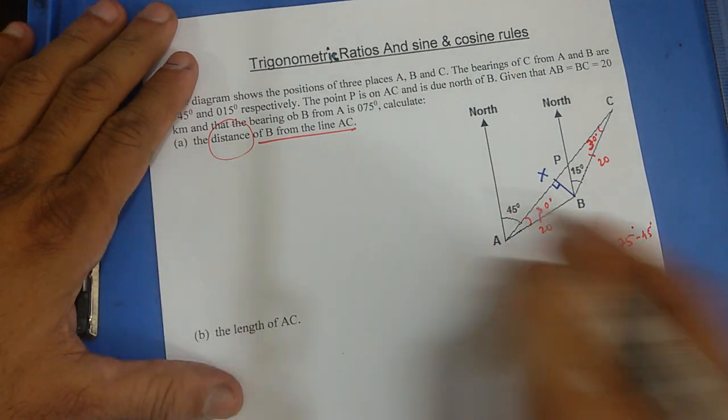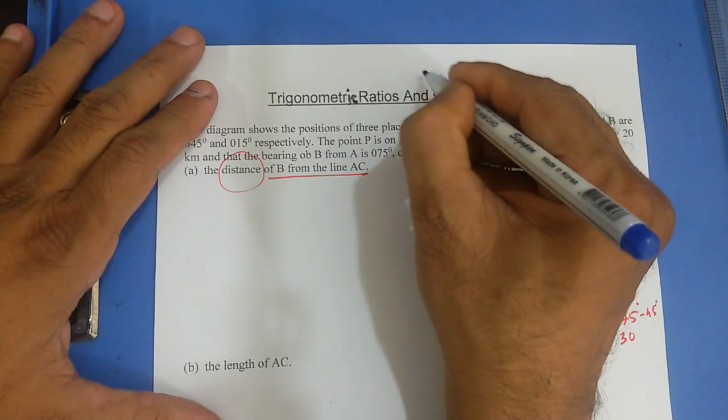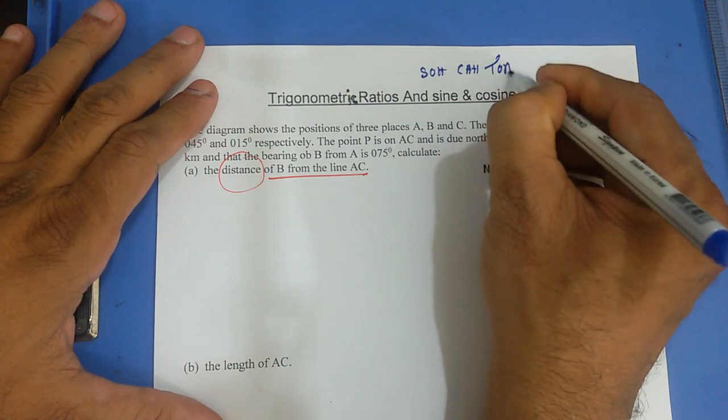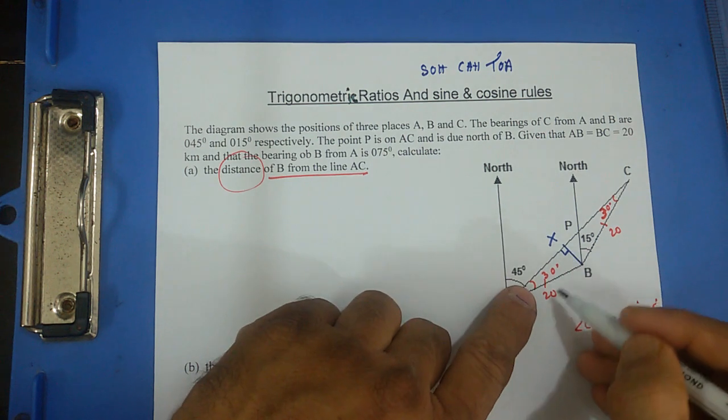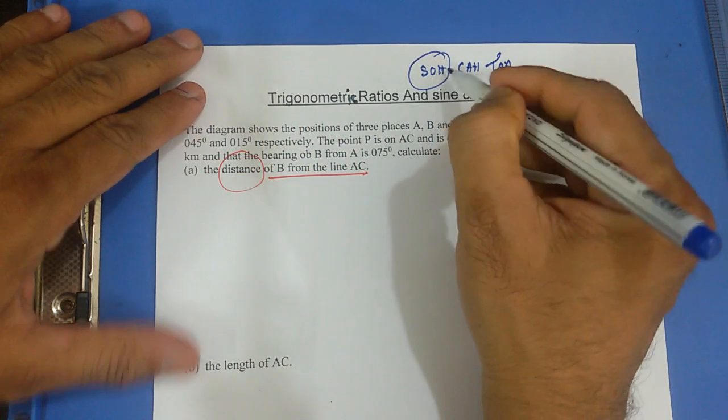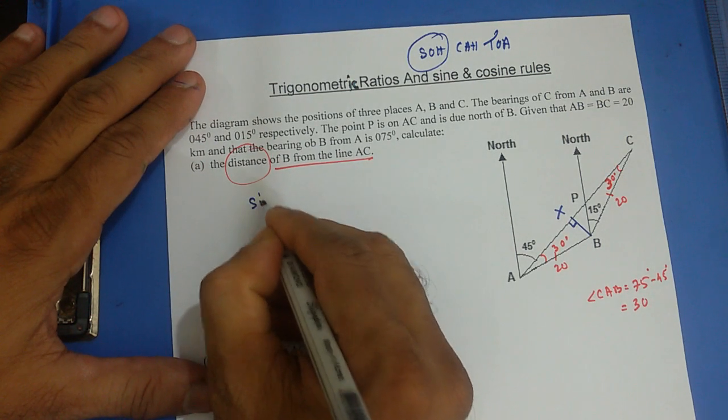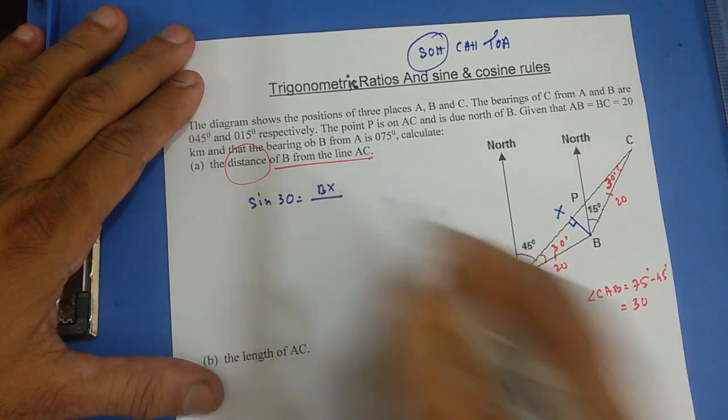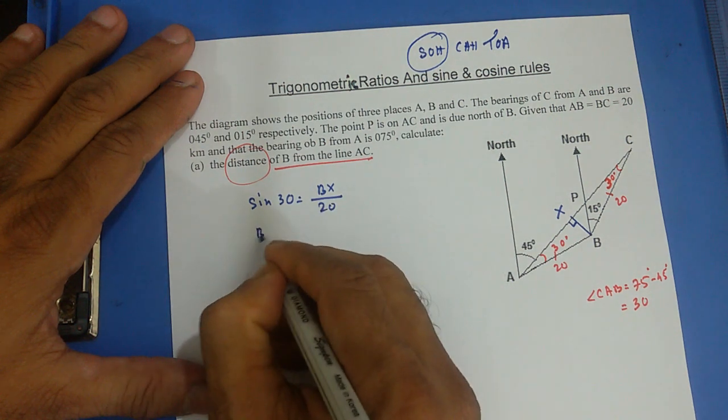So I can use that, SOHCAHTOA. And this is going to be opposite by hypotenuse. So we are going to use the sine, opposite by hypotenuse. So sine 30 degrees equals BX by AB, that's 20. Therefore,